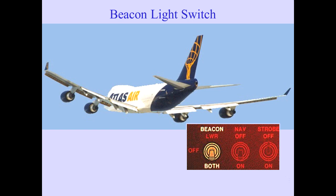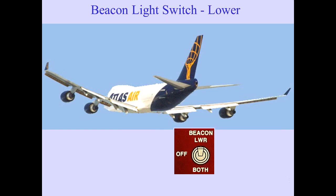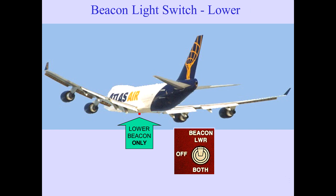The beacon light switch controls the red anti-collision lights which are mounted on the fuselage, one on the top and one on the bottom. The switch has three positions: off, lower, and both. Placing the switch in the lower position helps prevent vertigo and visible moisture.